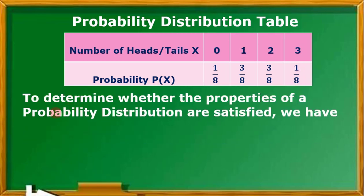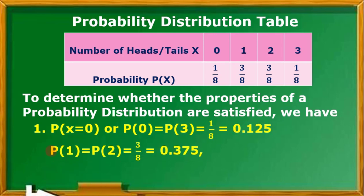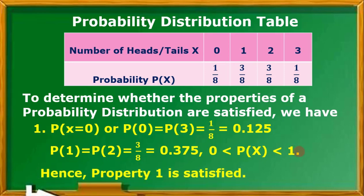To determine whether the properties of a probability distribution are satisfied: P of 0 equals 1/8, and that is equal also to P of 3, so they have the same probability distribution value, equal to 0.125. On the other hand, the probability of X equals 1 is 3/8, which is the same as the probability of X equals 2, or 0.375. Hence, we can say that the probability of all the X values is between 0 and 1, so property number 1 of the probability distribution function is satisfied.